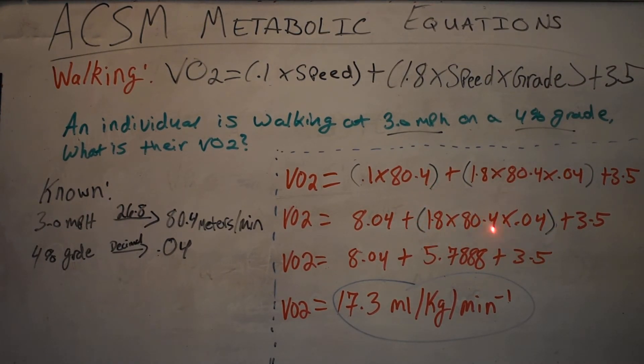Now just do this part in the parentheses, the 1.8 times 80.4 times 0.04. That will give you 5.788.